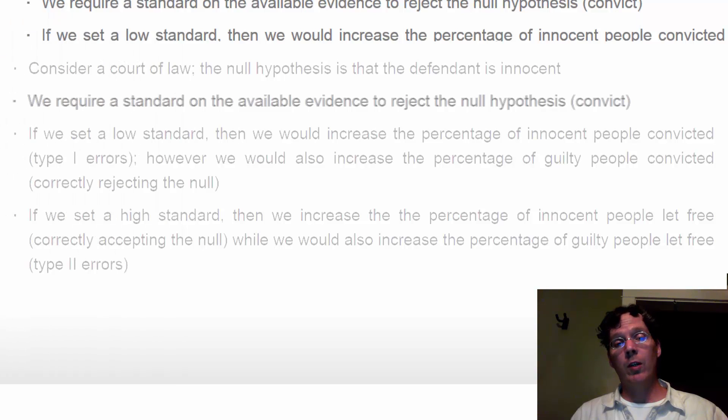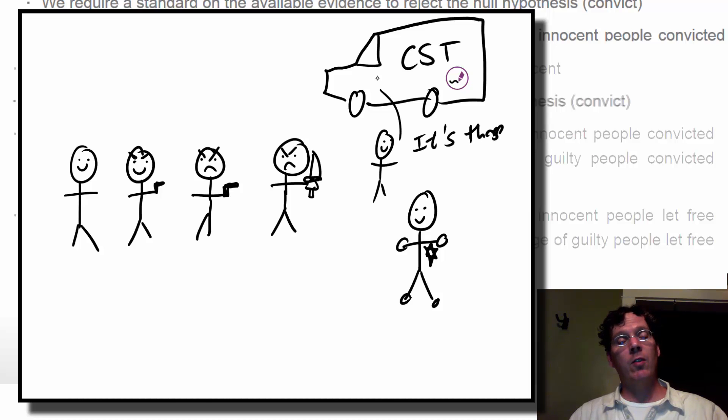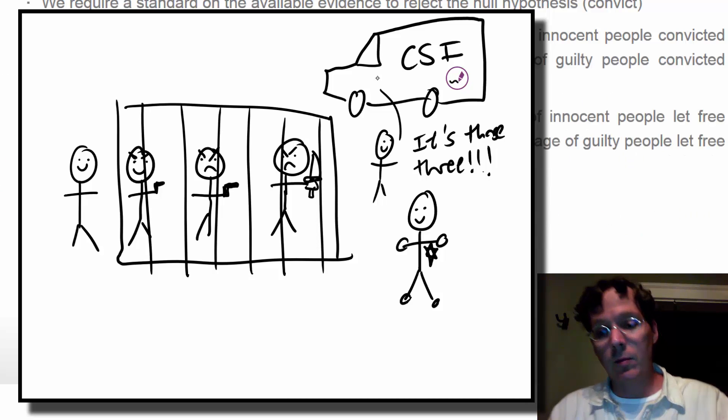This illustrates how the Type I error rate and Type II error rate are related. Of course, ideally, what you'd like is to get better evidence for a given standard, and that's the idea of doing things like increasing the sample size. But before we discuss those sorts of issues, let's talk about how we conduct hypothesis tests.